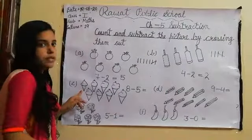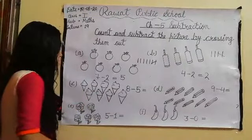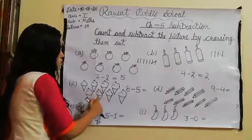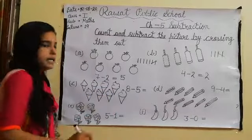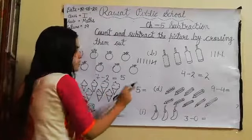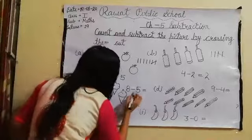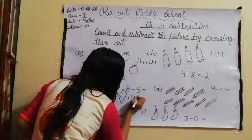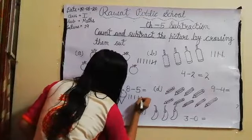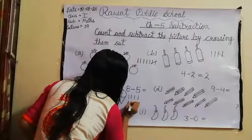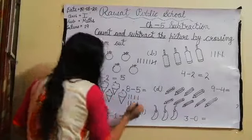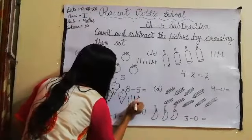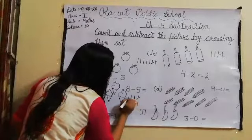Next, question C. How many ice creams in total? 1, 2, 3, 4, 5, 6, 7, 8 — 8 ice creams. We will cut 5. So we draw 8 lines: 1, 2, 3, 4, 5, 6, 7, 8. We cut 5: 1, 2, 3, 4, 5. Remaining: 1, 2, 3 — so 8 minus 5 equals 3.